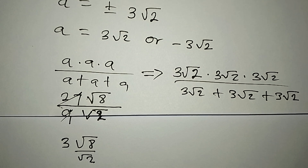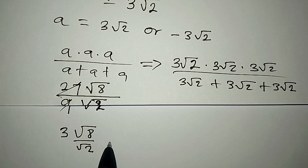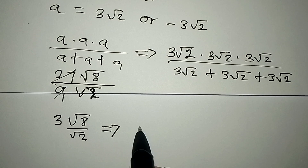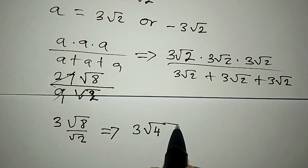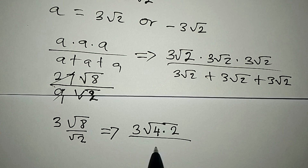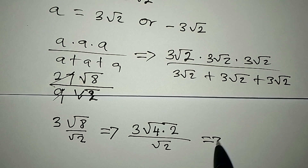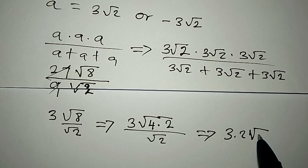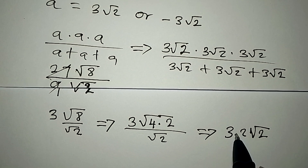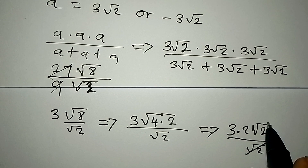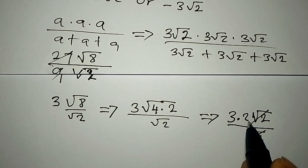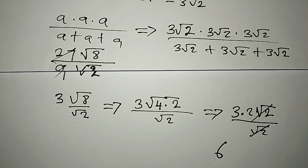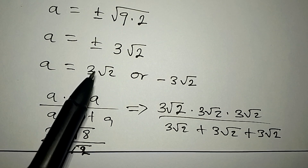We still need to check whether this gives us 6. We break 8 down: 3 times root 4 times 2, all over √2. The square root of 4 is 2, so we have 3 times 2 times √2, all over √2. The √2 cancels, and 3 times 2 equals 6. So the first value a = 3√2 is satisfying the equation.